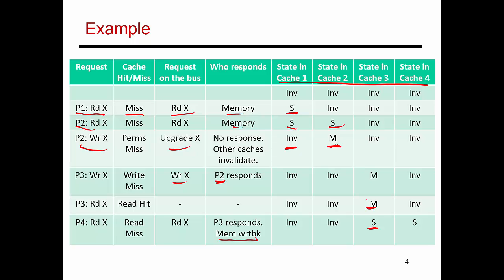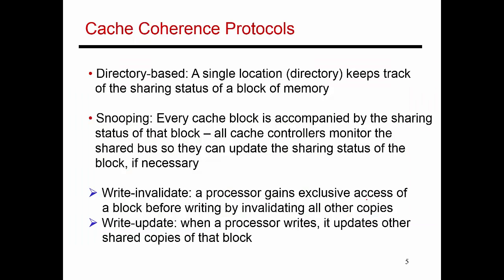This is essentially described as a snooping-based cache coherence protocol. You can also define a directory-based protocol. What we've seen here is also referred to as a write-invalidate protocol — when someone performs a write, everybody else invalidates their cache copy. Another option is a write-update protocol, where a write pushes the new value into all other caches. Most modern protocols use write-invalidate because it requires far less bus traffic than write-update.